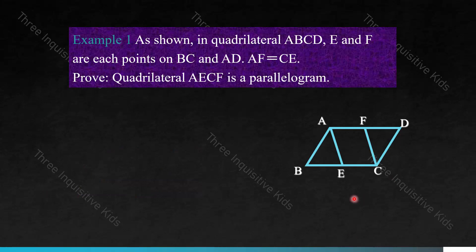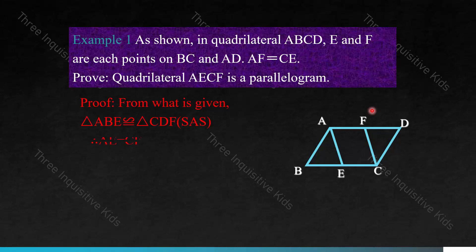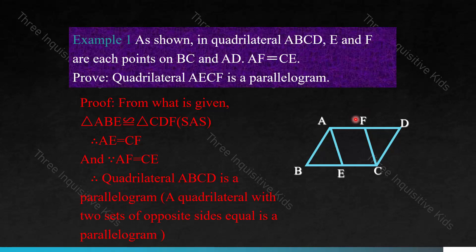As shown in quadrilateral ABCD, E and F are each points on BC and AD. We are also given that AF equals CE. Prove that quadrilateral AECF is a parallelogram. Using the first method, we know that triangles ABE and CDF are congruent by SAS — side angle side. So AE is equivalent to CF in length. And because AF and CE are the same, therefore quadrilateral AECF is a parallelogram.